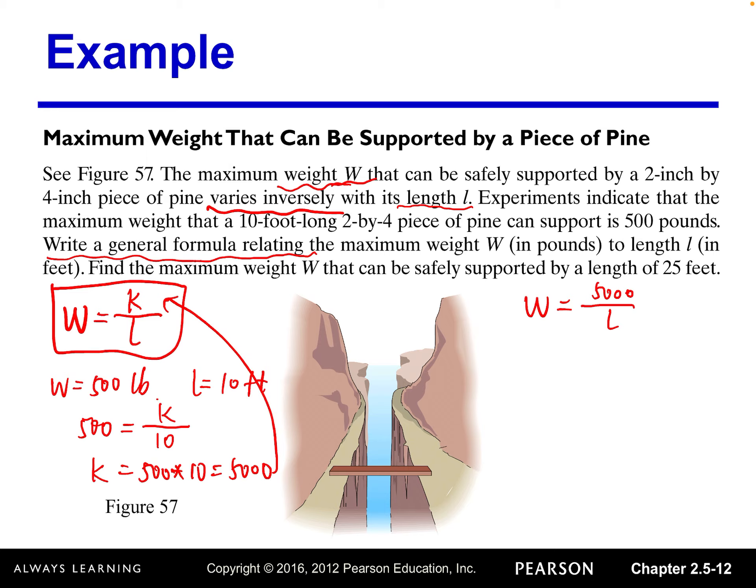And then next, we need to find the maximum weight w that can be safely supported by a length of 25 feet. So if l equals 25, and then the problem is asking what is the maximum weight w. So we plug in l equals 25, w equals 5,000 divided by 25. So we can easily get 200 pounds.